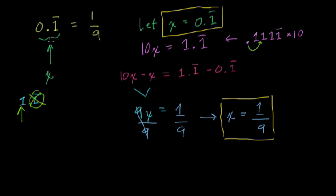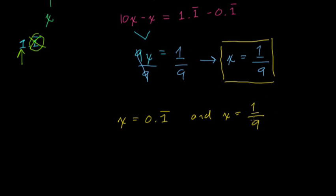We've shown that the 0.1 repeating decimal is 1 ninth. And you might write it this way: x equals 0.1 repeating, and x equals 1 ninth. So by the transitive property, if 1 over 9 and 0.1 repeating both equal x,